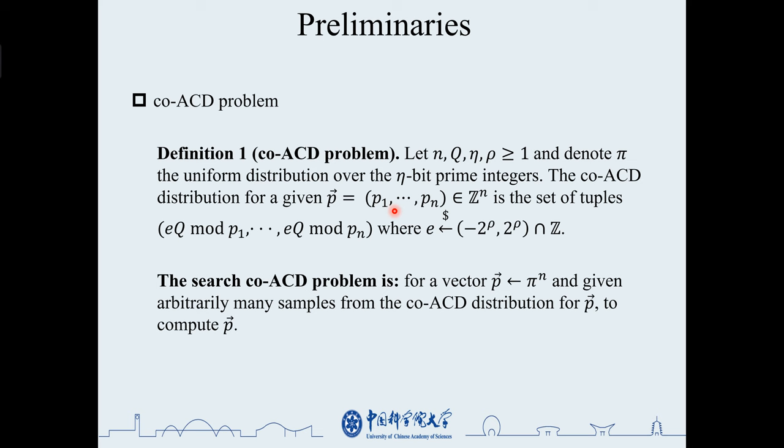Co-ACD distribution is a set of e multiply q mod pi. The search co-ACD problem is given arbitrarily many samples from the co-ACD distribution to recover pi.